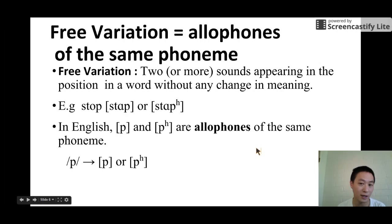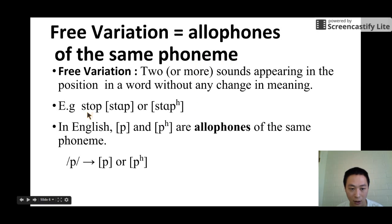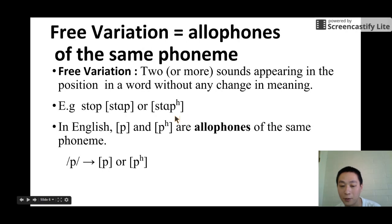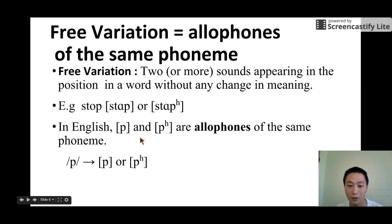Let's talk about free variation. If we have free variation, it means they are allophones of the same phoneme. For example: 'stop.' We can say 'stop' without aspiration on the final p, but we can also say 'stop' with aspiration. So the unaspirated and aspirated versions of /p/ are allophones of the same phoneme. In other words, the phoneme /p/ can be realized as either form.